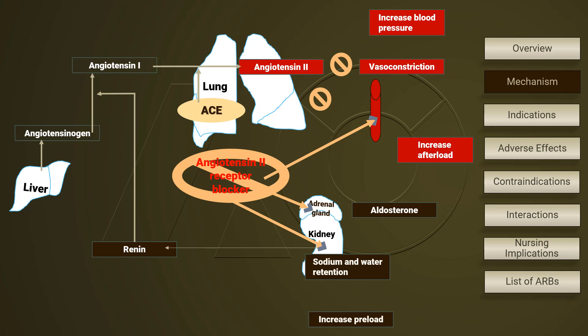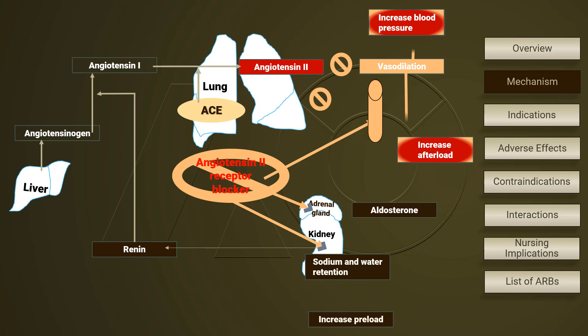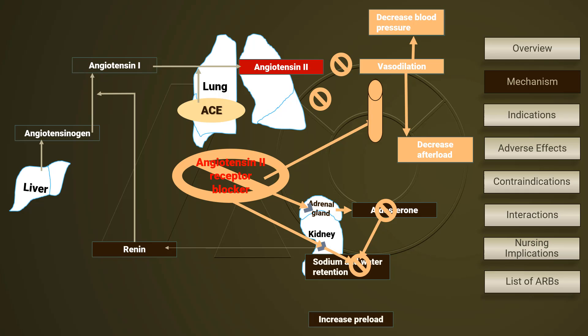Resulting from this rather full blockage is vasodilation, which decreases cardiac afterload. In addition, the adrenal-renal pathway is also affected by ARBs, resulting in decreased cardiac preload.